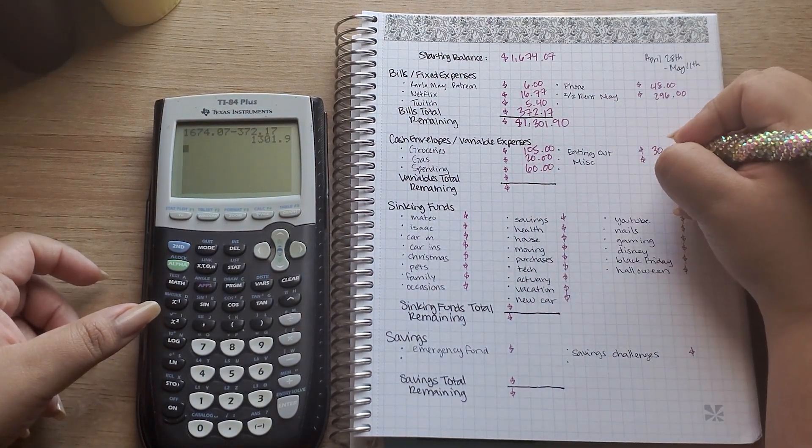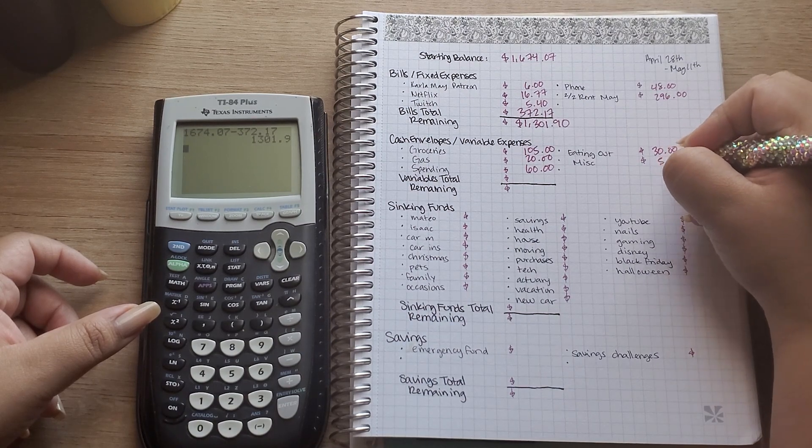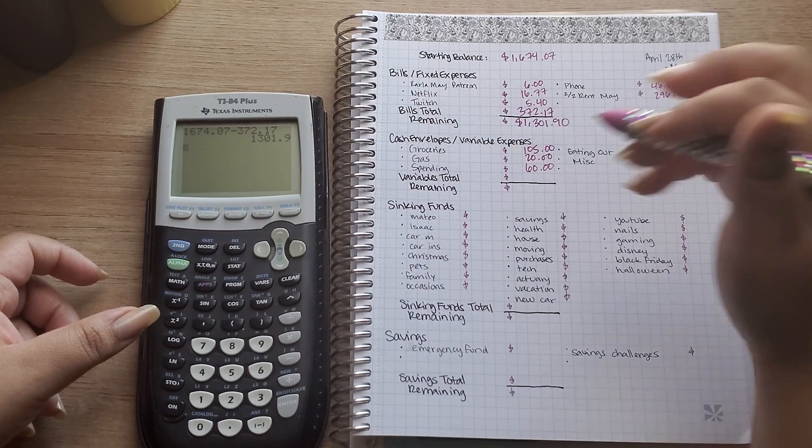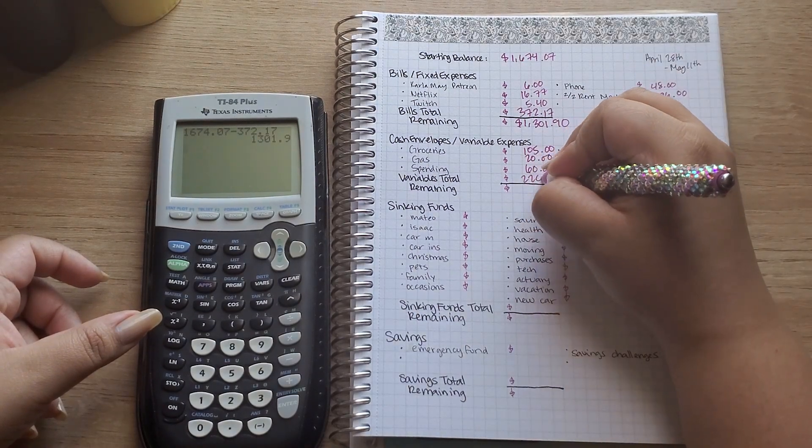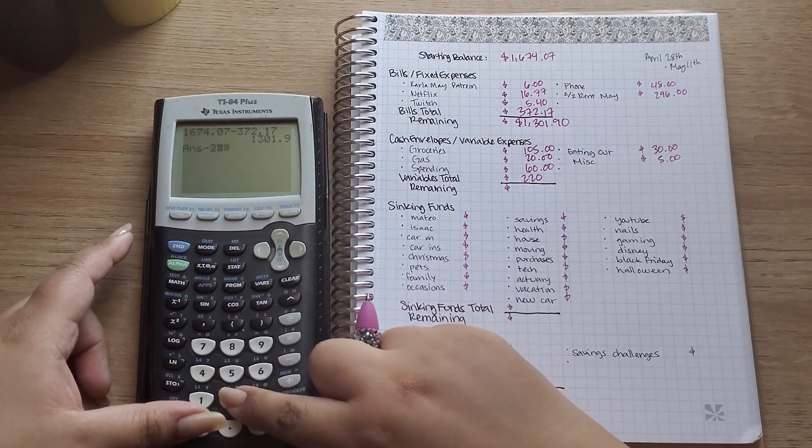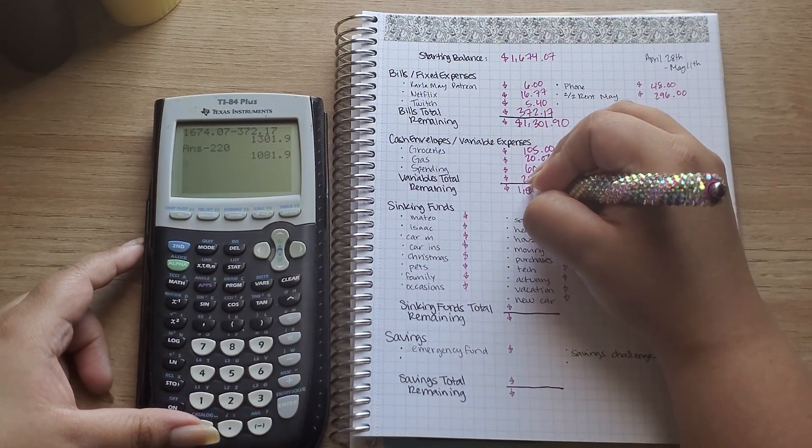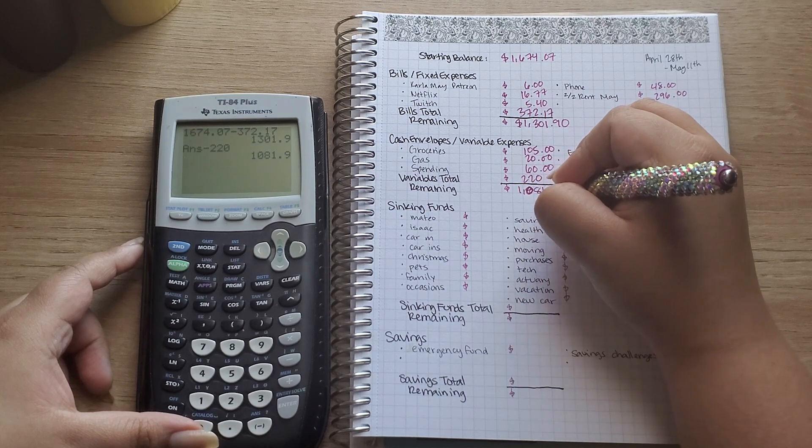Eating out I'm going to budget $30 and then miscellaneous is going to be $5. So the total for all these amounts is $220. So I'm going to subtract the $220 and now I'm left with $1,081.90.